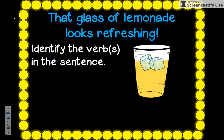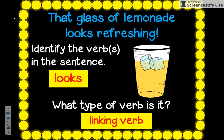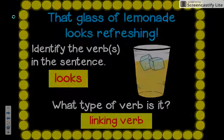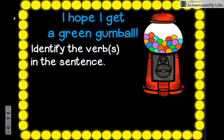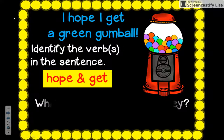'The glass of lemonade looks refreshing.' Do I see a word that shows action? Well, 'looks' — I'm not sure. Is there any word next to it helping it? No, 'lemonade' doesn't help 'look.' So I ask myself, can I replace 'looks' with an equal sign? 'Glass of lemonade equals refreshing.' Yes — so 'looks' is actually a linking verb, because it links our subject 'lemonade' to our predicate 'refreshing.' 'I hope I get a green gumball.' This sentence has two verbs: 'hope' because you can do that, and 'get' because you can see it. So 'hope' and 'get' are both action verbs.